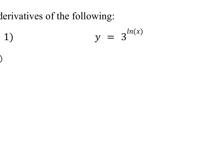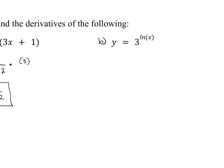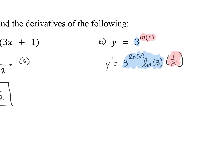For part B, we use the chain rule again, but this time the outer function is the exponential function and the inner function is the natural log function. Starting with the exponential rule, we get 3 to the power of natural log of x times the natural log of 3. Then completing the chain rule, the derivative of natural log of x is 1 over x. So the final answer is 3 to the power of natural log of x times the natural log of 3, all over x.